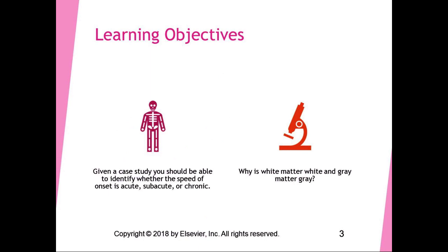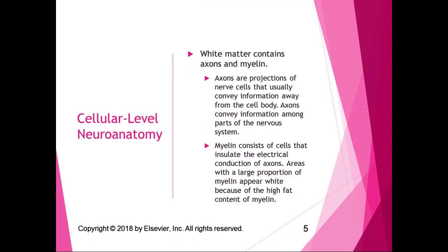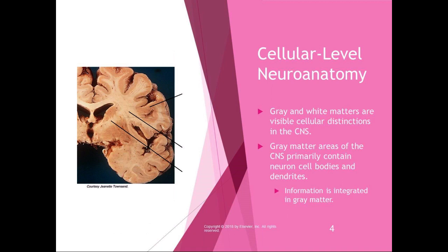The learning objectives — part of this is in chapter three — given a case study you should be able to identify whether the speed of onset is acute, subacute, or chronic. Why is white matter white and gray matter gray? White and gray matter are the visible cellular distinctions in the central nervous system. The gray matter of the central nervous system primarily contains neuron cell bodies and dendrites — that's where information is integrated and neurotransmitters are created.